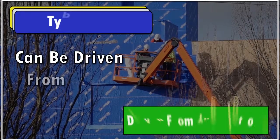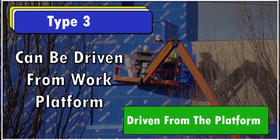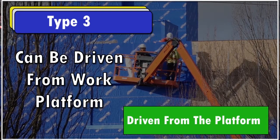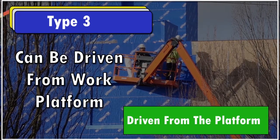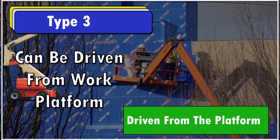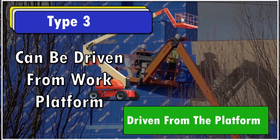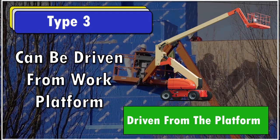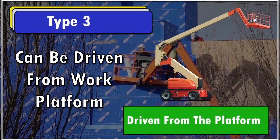Type 3 mobile elevated work platforms can be driven while elevated and are controlled from the work platform — an articulating boom lift is an example of a Type 3 mobile work platform.